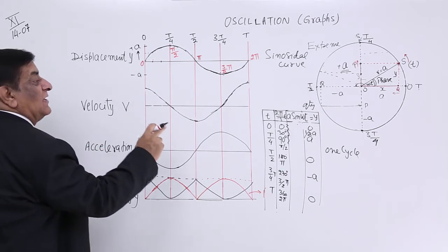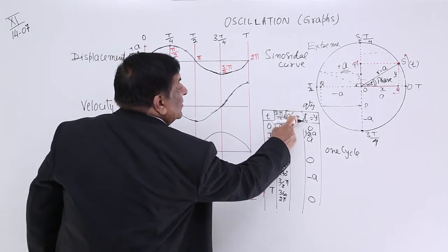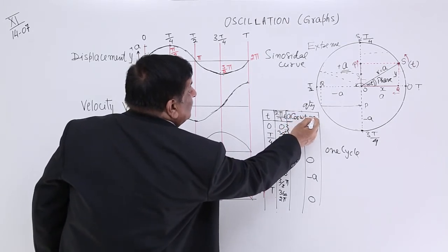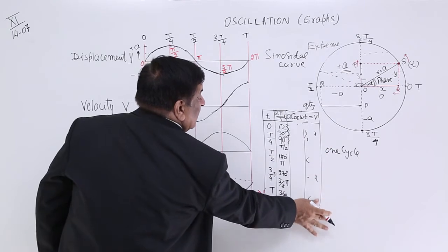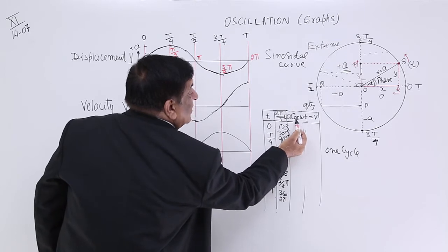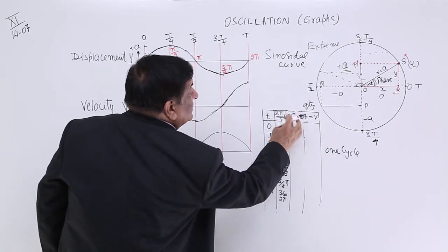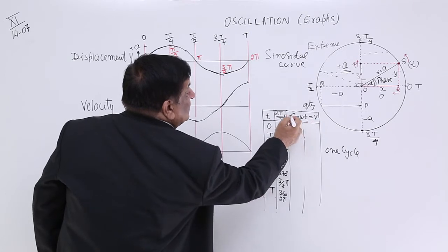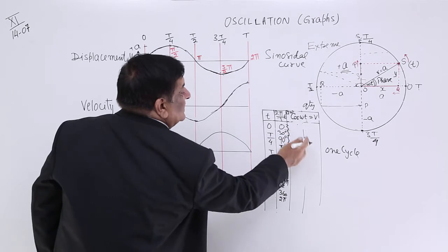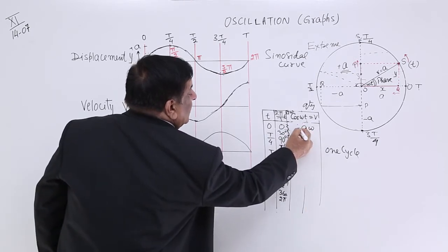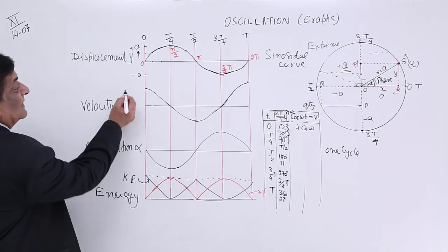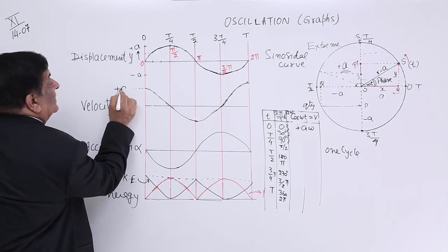Then for velocity, we change the equation. It is A omega cos omega t. When t equals 0, omega t equals 0, and cos 0 equals 1. So velocity is A into omega cos omega t. Velocity comes to be A omega, maximum value. So when t equals 0, velocity has the maximum value. The amplitude is A omega and minus A omega.